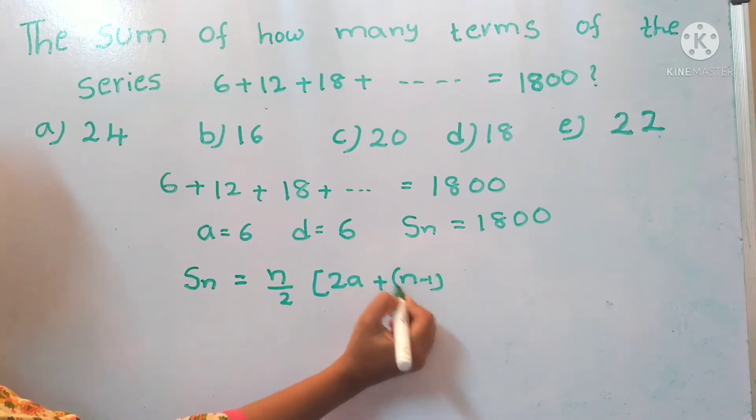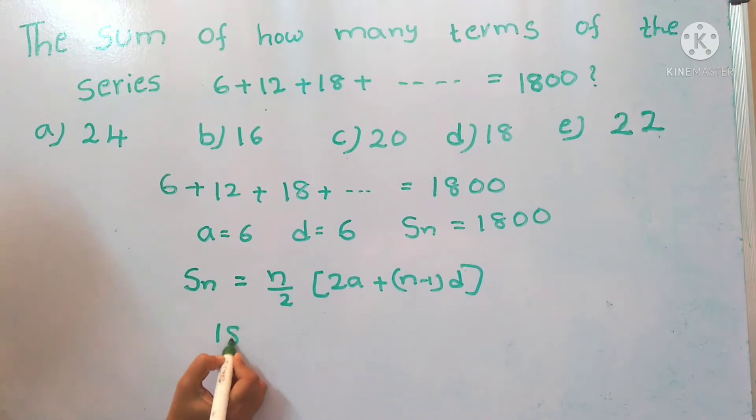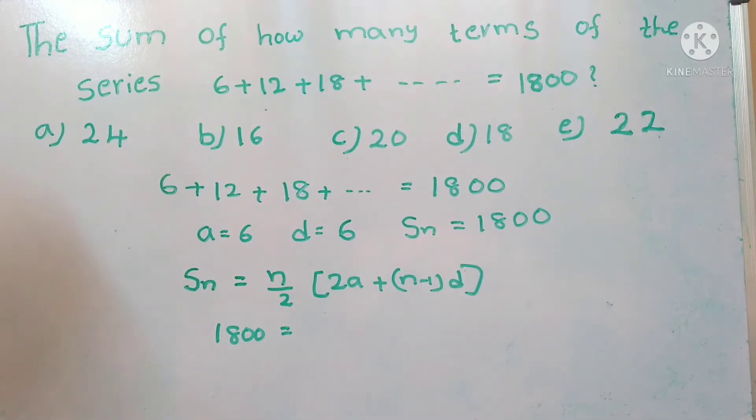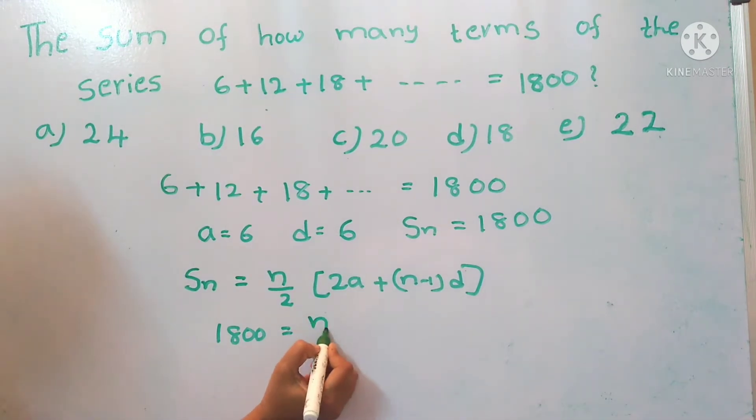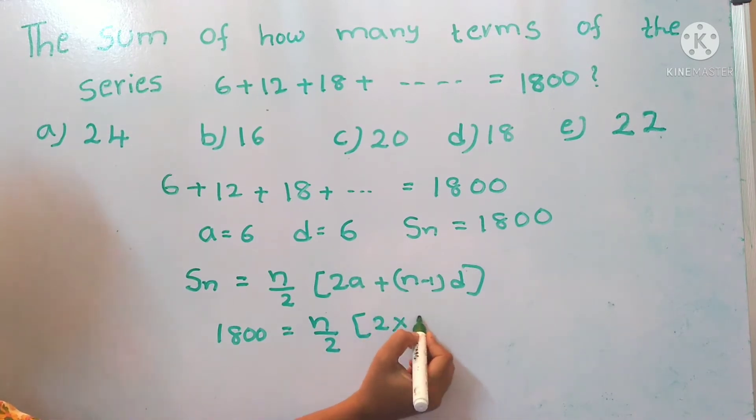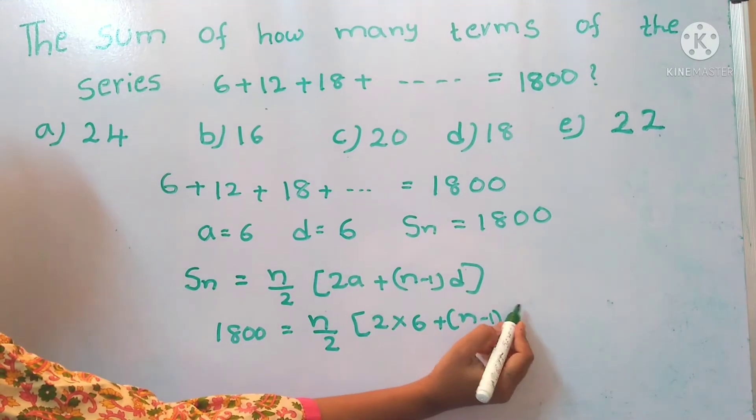Now we have to substitute the values in the formula. So sum of the series Sn equals 1800, and we need to find out the n value. So n/2 into 2 into a value 6, plus (n-1) into d value, which is 6.